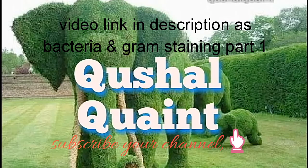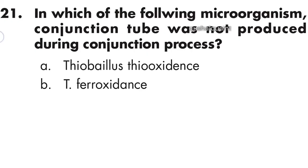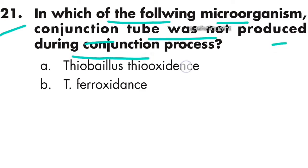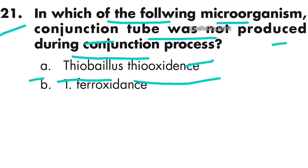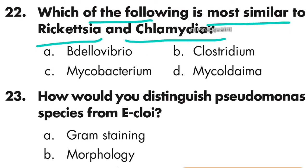Question 21: In which of the following microorganisms is a conjugation tube not produced during the conjugation process? The answer is Thiobacillus thiooxidans — option A is correct.